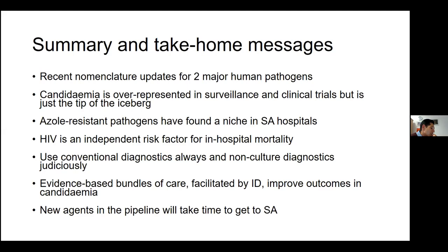In terms of treatment for a fungal brain abscess, you want an agent that penetrates well into the brain, so probably amphotericin B, but it would completely depend on the susceptibility of that pathogen. Combination treatment could potentially be considered. The prognosis in general for fungal brain abscesses is not fantastic — generally not great.